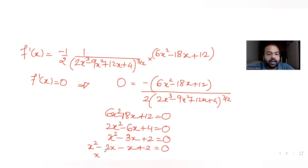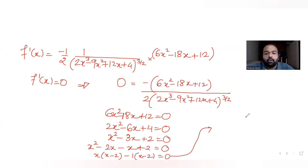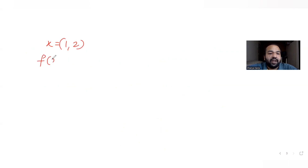Solving the quadratic x² minus 3x plus 2 equals 0: factoring gives x² minus 2x minus x plus 2 equals 0, so x(x−2) minus 1(x−2) equals 0. This gives x equals 1 or x equals 2. These are exactly our integration limits.